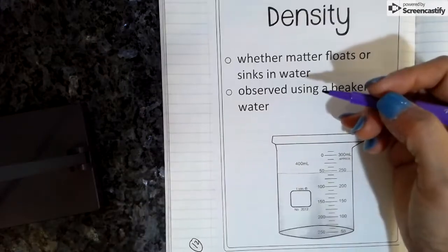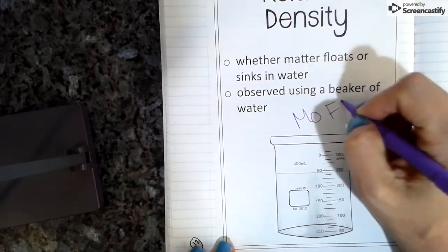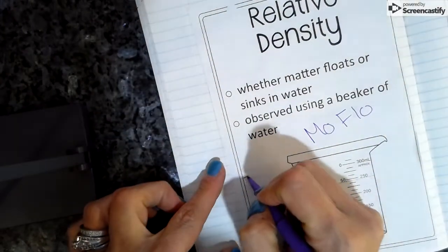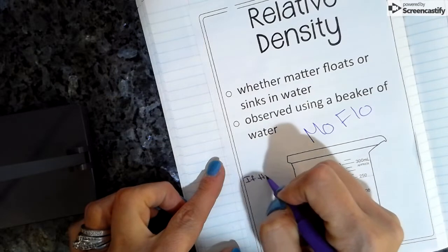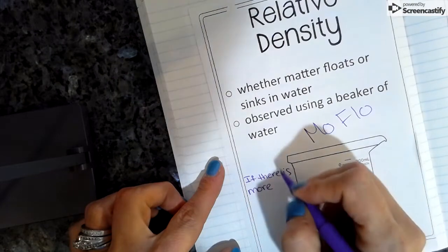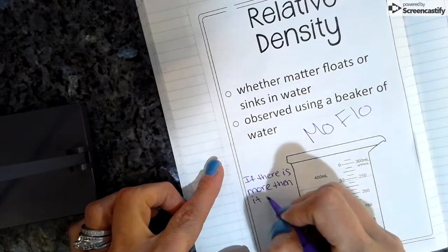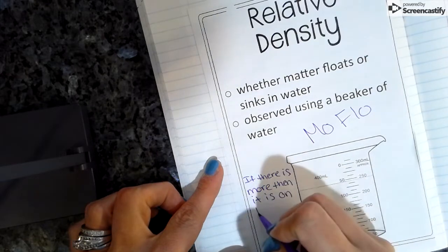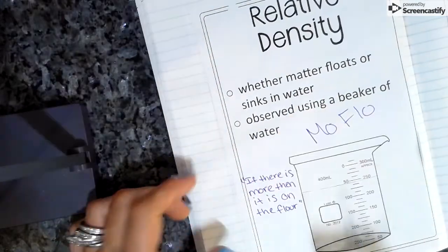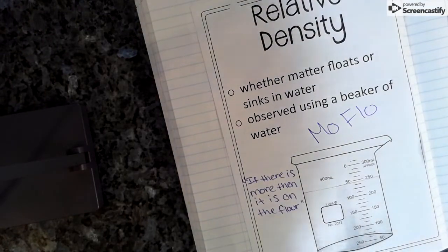So I want you to write what we've been learning so far about mo-flow. And then what do I tell you, if there is more, then it is on the floor, right. That's all mo-flow is. If there's more, it's on the floor. If it's less, then it's up high, it's floating.